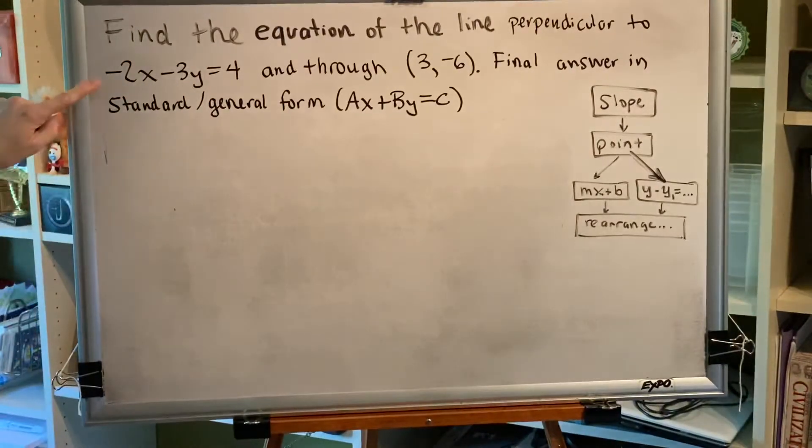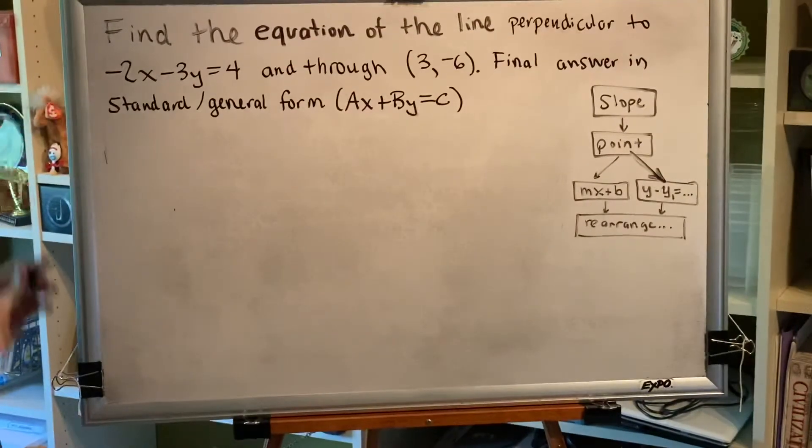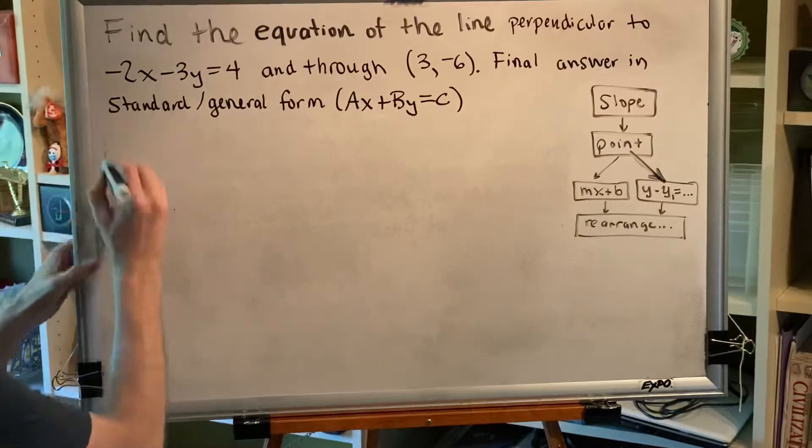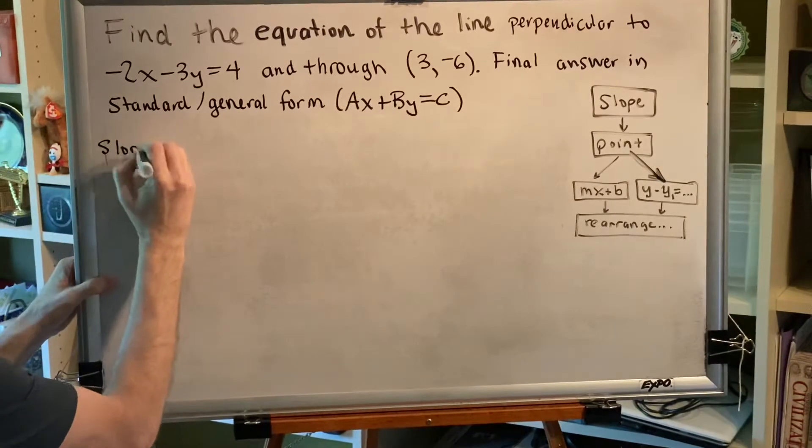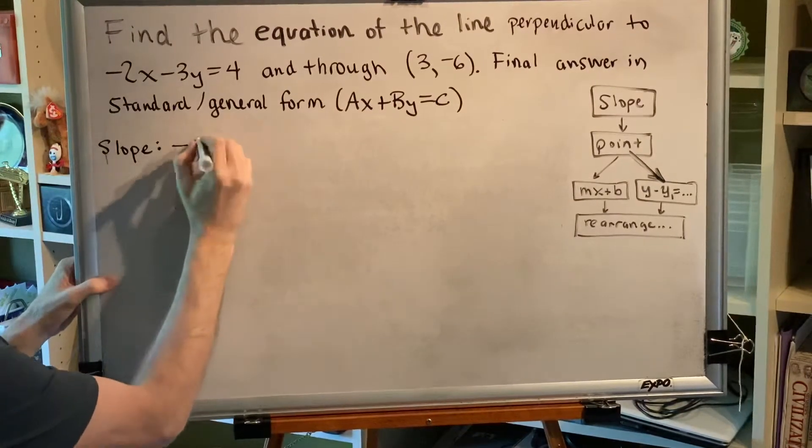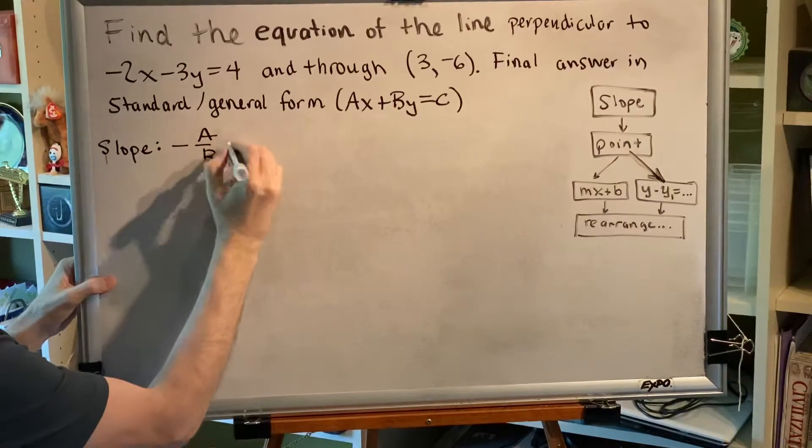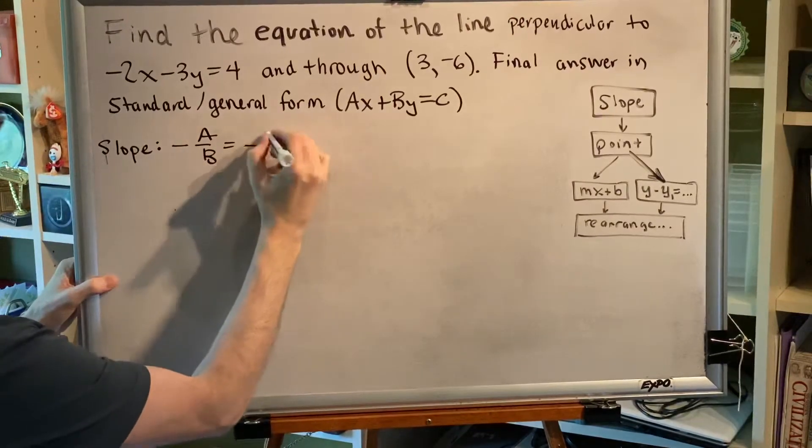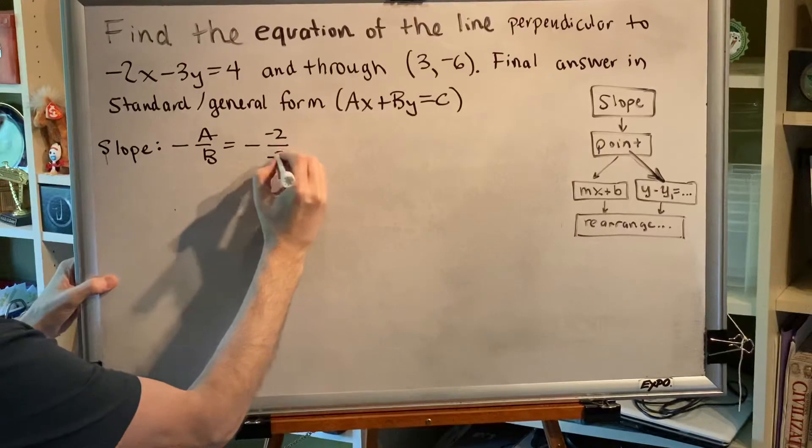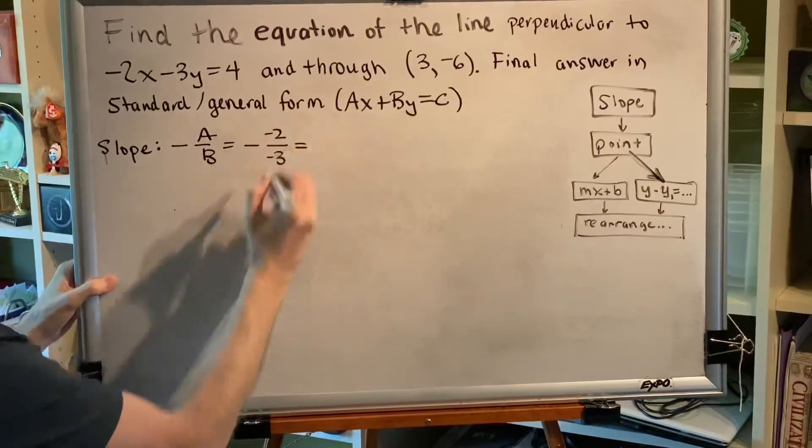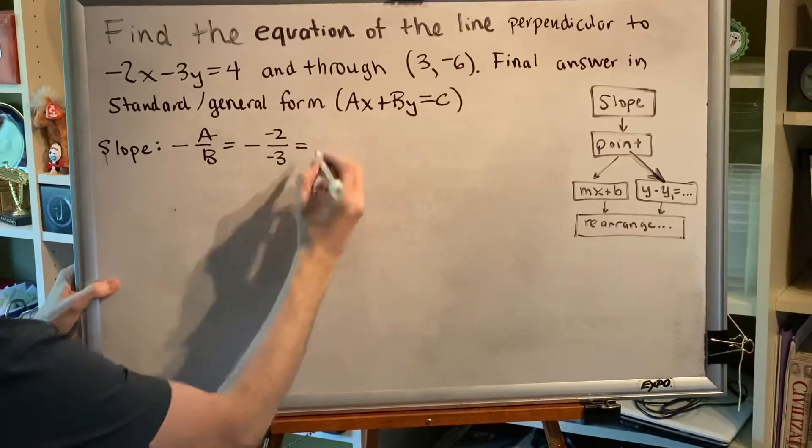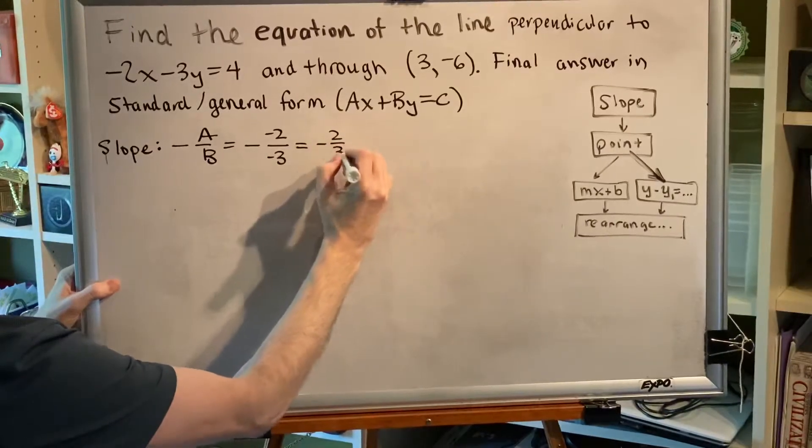The line that was given to us is -2x - 3y = 4. This is standard form and so the slope of the given line is equal to -a/b which is equal to -(-2)/(-3). I have an odd number of negatives which makes a negative so my final slope will be -2/3.